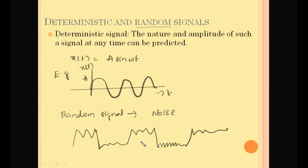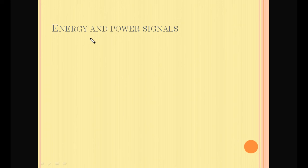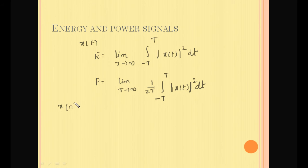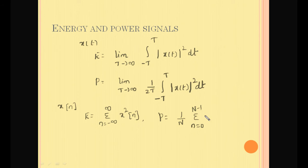Signals are also classified as energy and power signals based on their energy or power. For a continuous time signal x(t), the energy is given by: E = lim(T→∞) ∫₋ₜᵀ |x(t)|² dt, and the power is given by: P = lim(T→∞) (1/2T) ∫₋ₜᵀ |x(t)|² dt. For a discrete time signal x(n), energy is given by: E = Σ(n=−∞ to ∞) |x(n)|², and power by: P = (1/N) Σ(n=0 to N−1) |x(n)|².